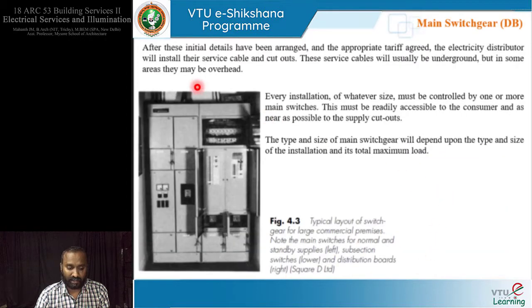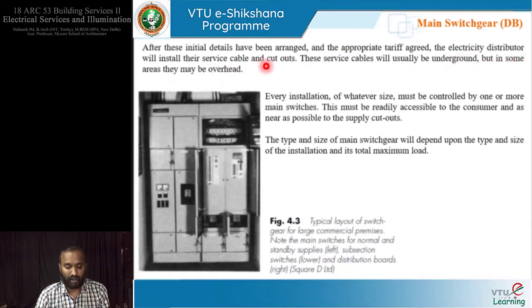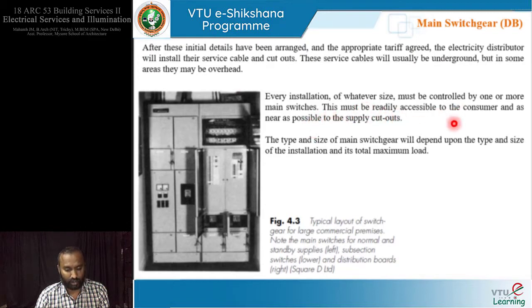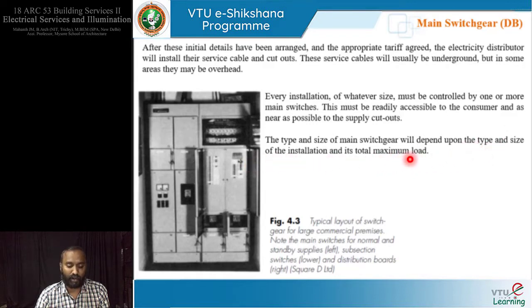After initial details have been arranged and the tariff metering is agreed, the electricity distributor — the government — will install their service cable and cutout. These will usually be underground, but in some cases can be overhead. Every installation will be controlled by one or more main switches, which must be readily accessible to the consumer and as near as possible to the supply cutouts. The type and size of main switchgear depends upon the type, size, and maximum total load of the installation.